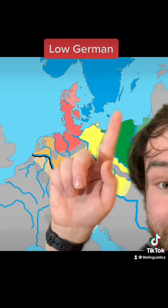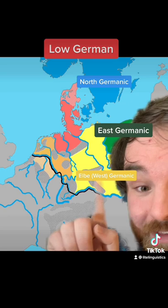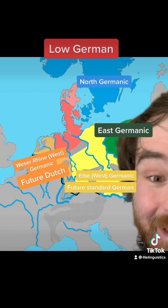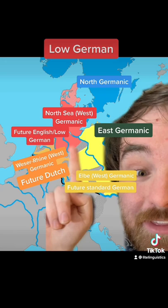This map shows the Germanic languages around the year zero. In the north we have the North Germanic languages, and in the east we have the East Germanic languages. Here in the yellow we have what evolves into High German and its related languages, and in the orange we have what evolves into Dutch and its related languages. And here in the red we have the North Sea Germanic languages, which evolved into English, Frisian, and Low German.